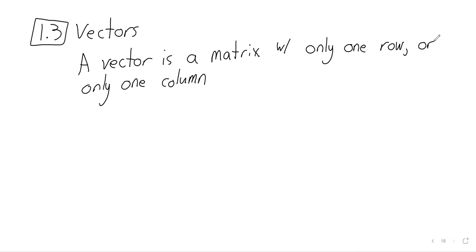In theory, we can think of a vector that way. Here is a vector with only one column. Here is a vector with only one row.